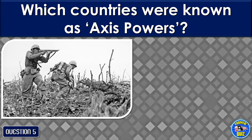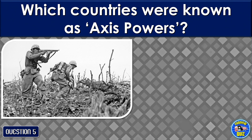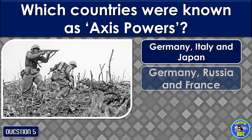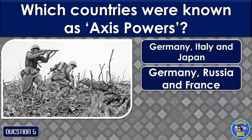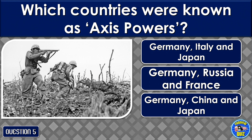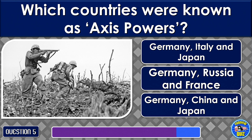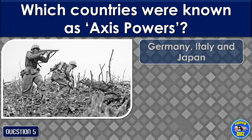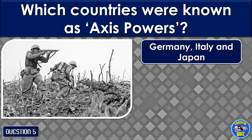Which countries were known as Axis powers? Germany, Italy, and Japan.